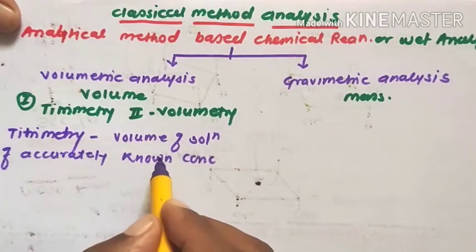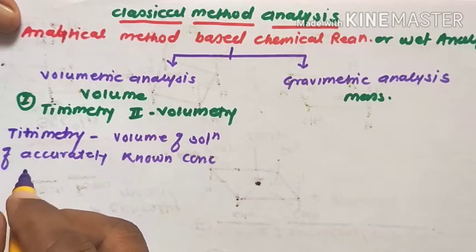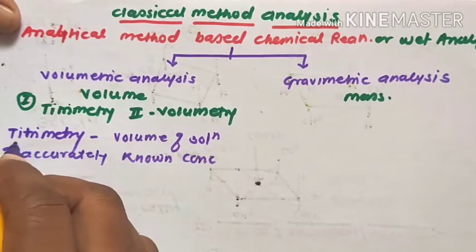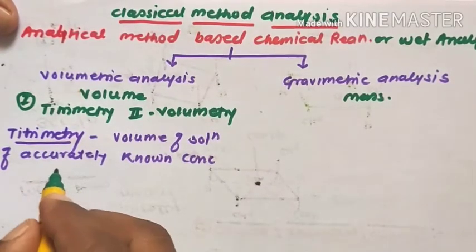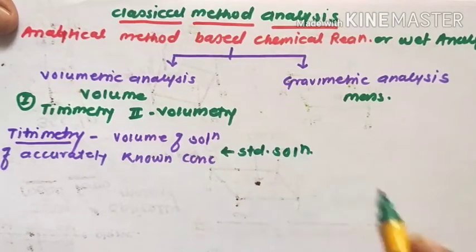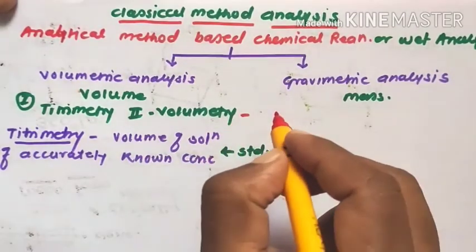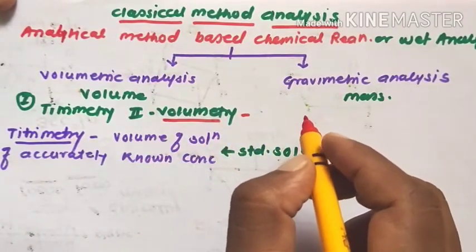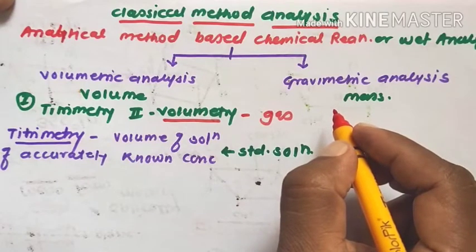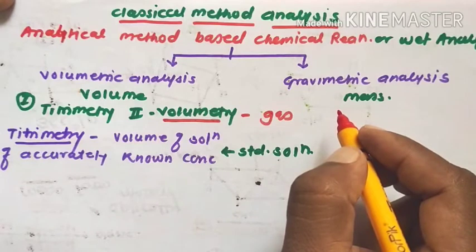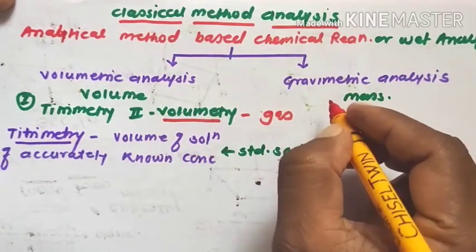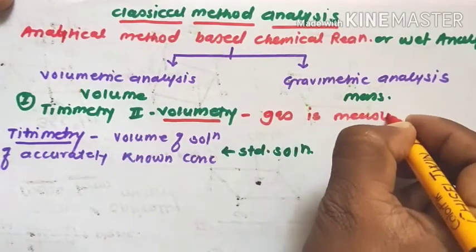In titrimetric analysis, the volume of a solution of accurately known concentration is measured with the volume of the solution of the species to be determined. The accurately known concentration solution is also known as a standard solution. In the second subclass, volumetric analysis, the gas evolved or absorbed in the chemical reaction is measured and correlated to the concentration of the species present.